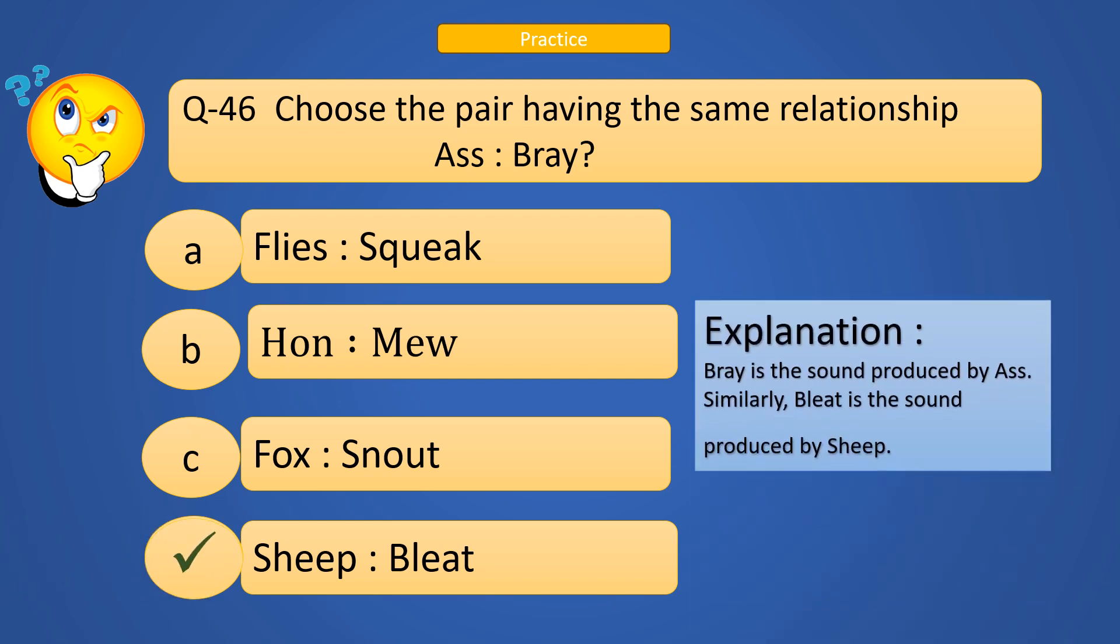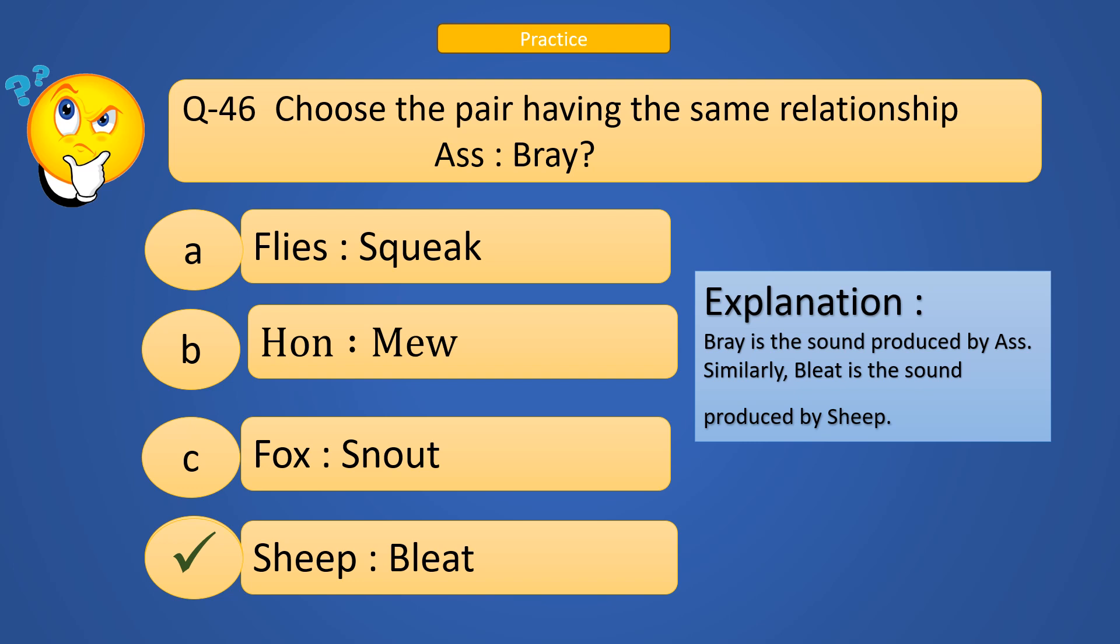So the correct answer is Sheep : Bleat. Why? Just see here. Bray is the sound produced by ass. Similarly, bleat is the sound produced by sheep.